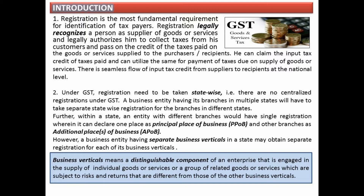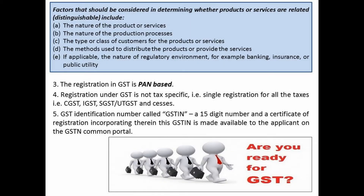An entity having separate business verticals in a state may obtain separate registration for each of its business verticals. Business vertical means a distinguishable component of an enterprise engaged in the supply of individual goods or services, or a group of related goods or services, subject to risks and returns different from other business verticals. Factors include: (A) nature of product or services, (B) nature of the production process, (C) type or class of customers, (D) methods used to distribute the product or provide services, and (E) if applicable, the nature of the regulatory environment, e.g., banking or insurance.